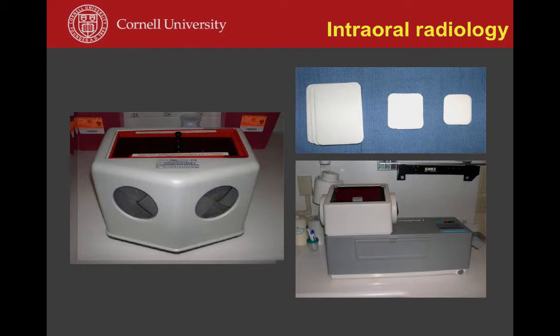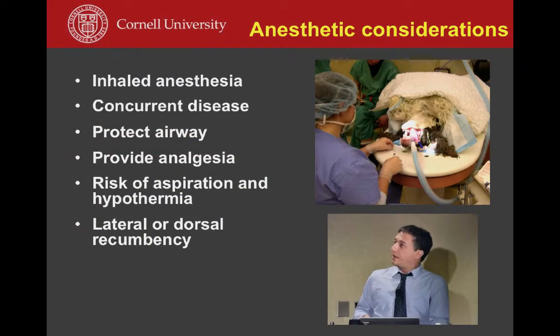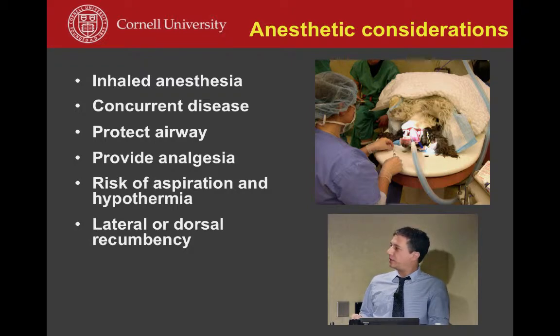For film processing, the most commonly used film sizes are the occlusal size 4 for large areas and the periapical size 2 for groups of 2 to 4 teeth. In small animals, size 0 may be needed, especially in cats or small dogs. Films can be manually processed in a chairside darkroom with developer, fixer, and water, or with an automatic processor costing around $2,500. Digital equipment ranges from $10,000 to $20,000 depending on the model.